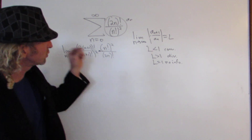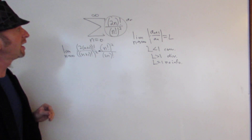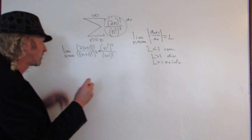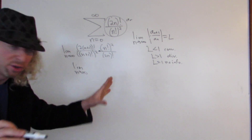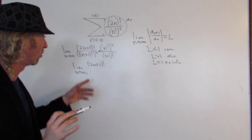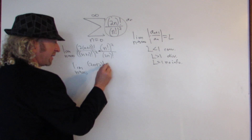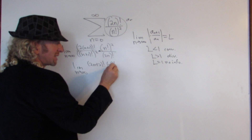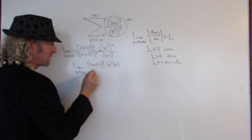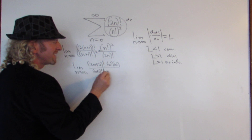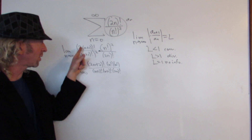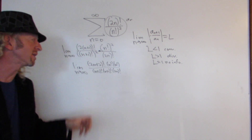Let's check that very carefully. We plugged in n+1 for all the n's, then divided by a_n by flipping it. Now we have to carefully simplify the factorials. This is the limit as n goes to infinity. We can distribute the 2, so this becomes (2n+2)! in the numerator. And n! squared — I'm going to write it as n! times n! — that might add some clarity. On the bottom, we have (n+1)! squared, which is (n+1)! times (n+1)!, and then (2n)!.